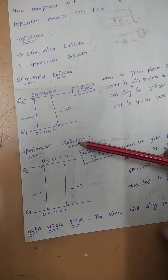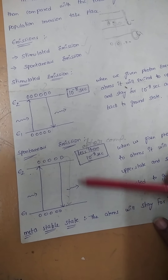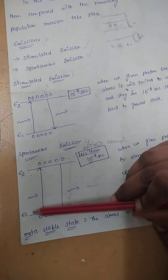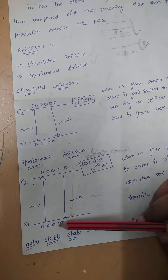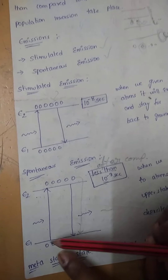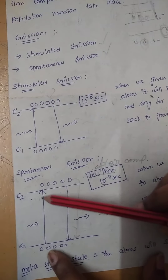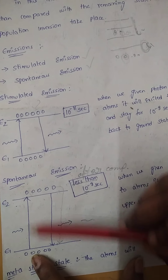In spontaneous emission, we have taken two energy levels, E1 and E2. We give some energy to the atoms, and those atoms get excited to the excited state E2.